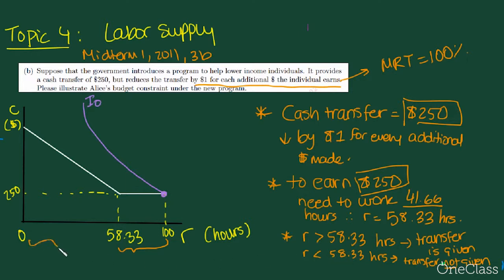If R is less than 58.33 hours, that means the transfer will not be given. And as a consequence, for every additional hour that she works, she'll lose $1 from the transfer. So that means that if she doesn't work at all, she can still get $250.